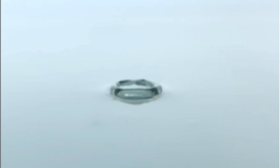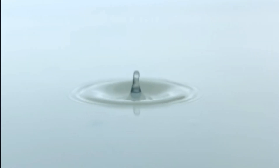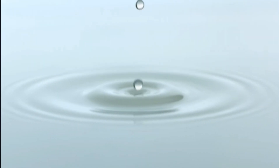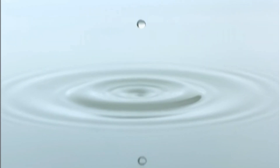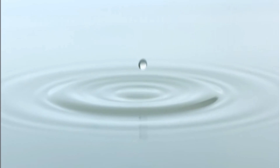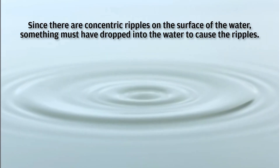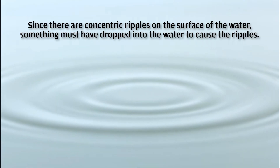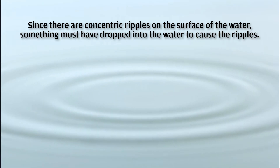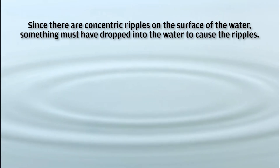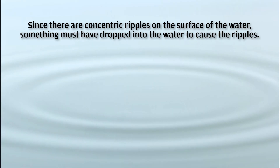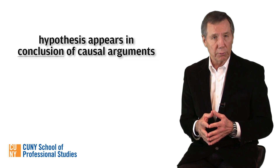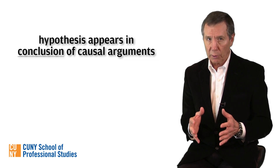When we see ripples emanating out on the surface of the water, we hypothesize what could have caused them. Since there are concentric ripples on the surface of the water, something must have dropped into the water to cause the ripples. The hypothesis is stated in the conclusion of a causal argument.